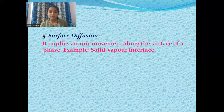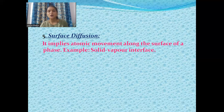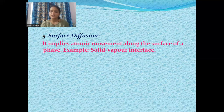The last type of diffusion is surface diffusion. It implies atomic movement along the surface of a phase, for example a solid-vapour interface.